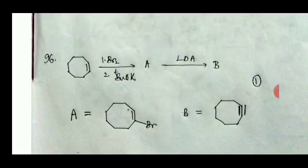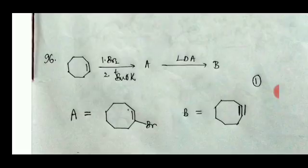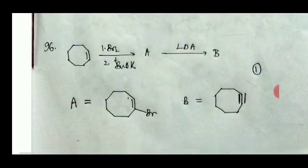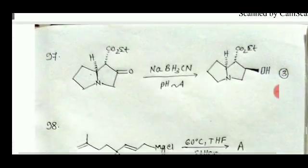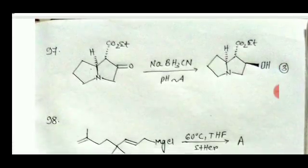For question number 96, I am a little confused, but according to me the most probable product is this one. In the first step bromine addition occurs, then one bromine is eliminated. When stronger LDA is applied, the other bromine is also eliminated, giving the alkyne product. Option 1 should be the correct answer.